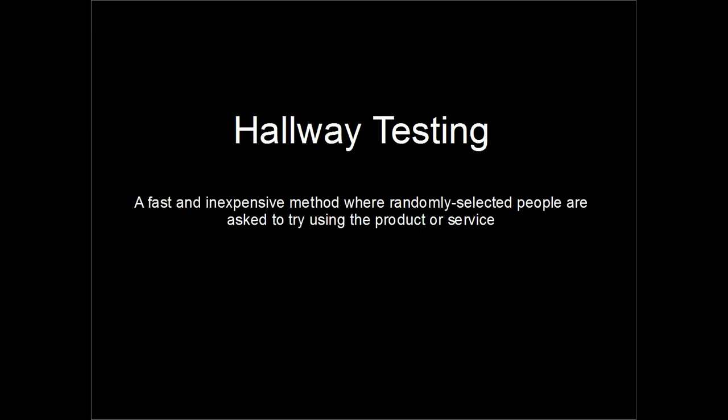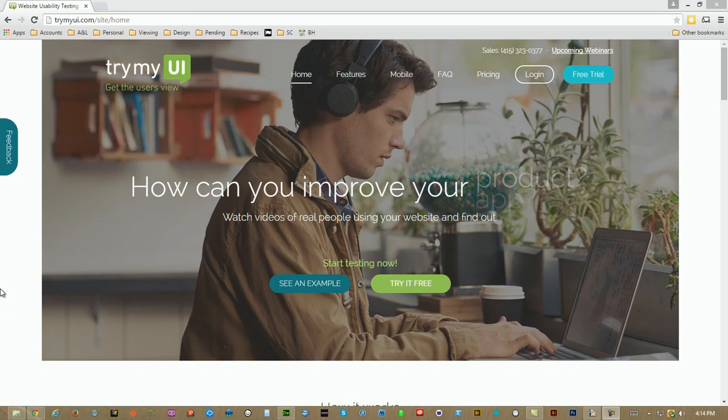Let's look at some of the usability testing methods that are available. Hallway testing is a fast and inexpensive method where randomly selected people are asked to try using a product. This can be done in public by soliciting people to come to a testing location, or online. One online service to consider is TryMyUI.com.